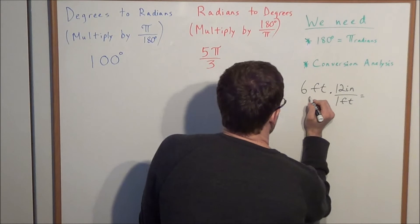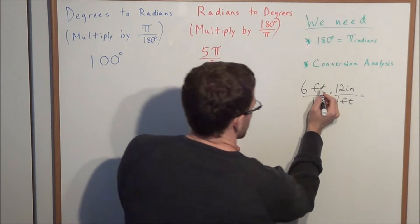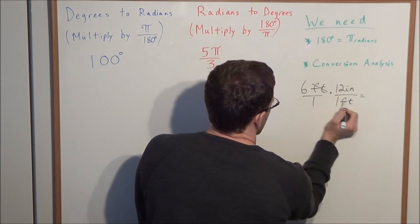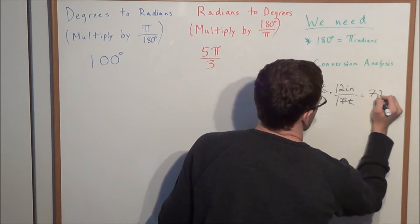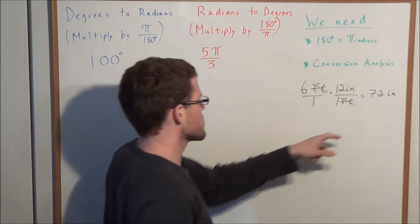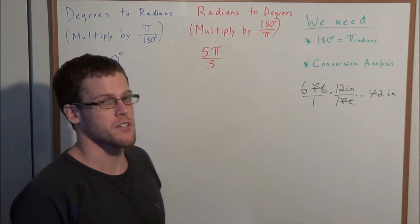The way that this works, these units of measurement are going to cancel out. Feet is going to cancel out with feet, and we have 6 times 12 inches is 72 inches. So we're going to use this strategy for these types of problems here.